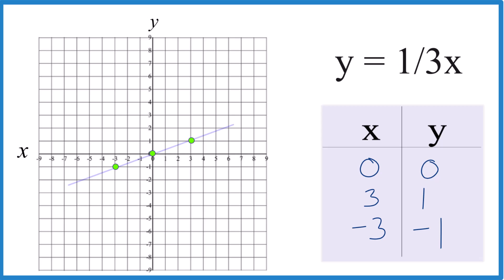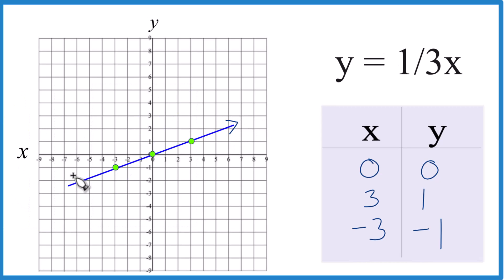Let's put a line through that. And we'll put arrows, show that it goes to infinity, and that is the graph for y equals one-third x, using our table of values here.